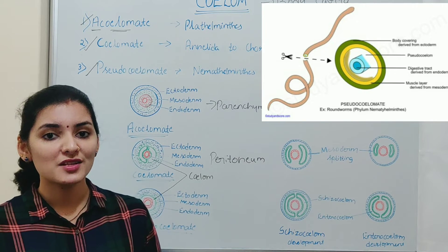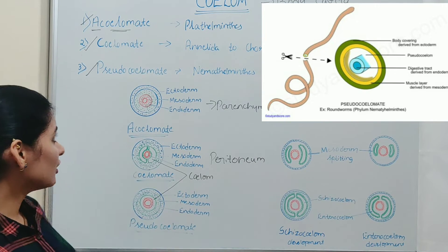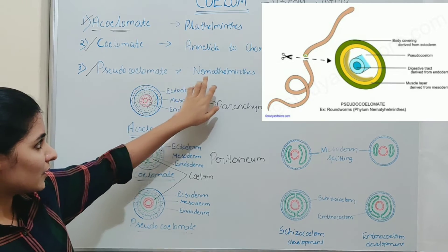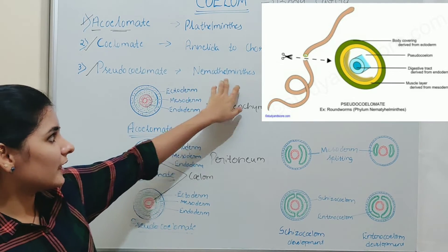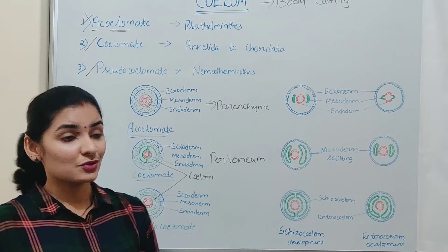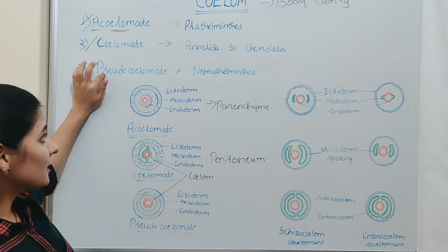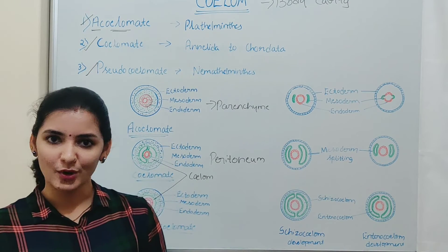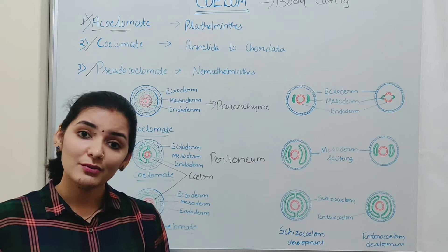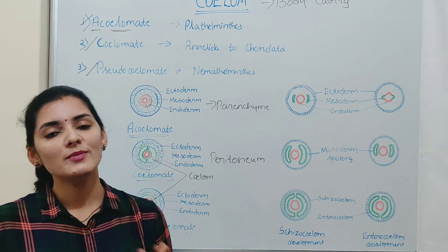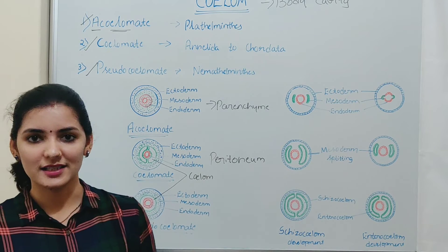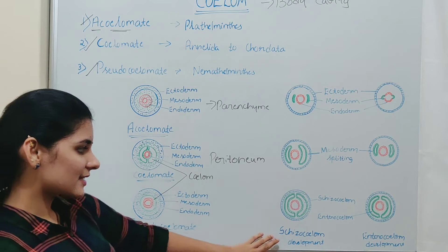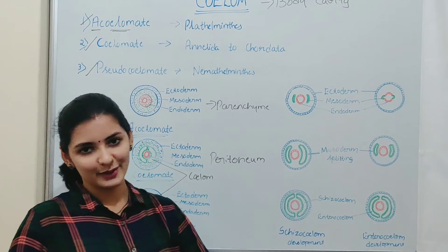Organisms which possess this Pseudocoelom are known as Pseudocoelomates. The example is Phylum Nematoda. These are the three types of organisms based on the presence or absence of a body cavity. Apart from that, coelom is also categorized into two categories based on its formation: Schizocoelom and Enterocoelom.